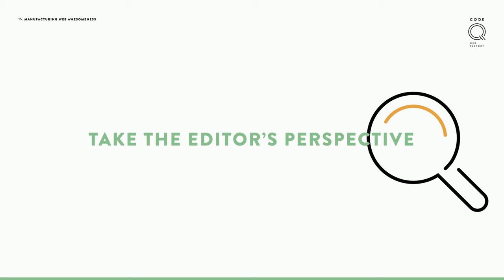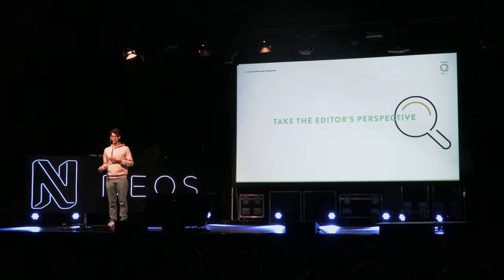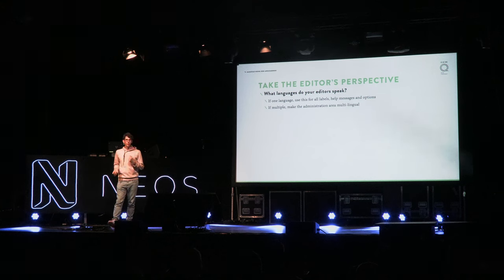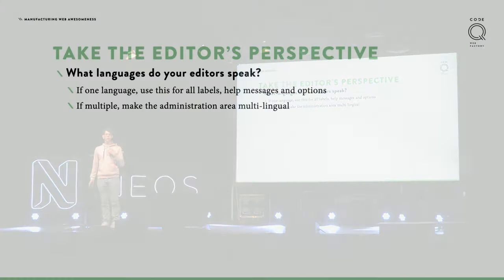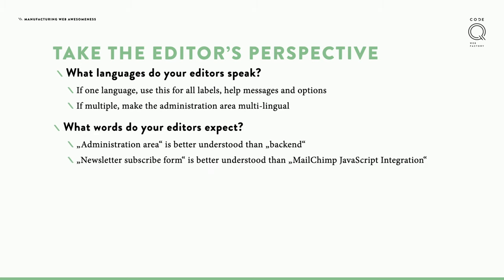It's very important that you understand what editors will be using your website before you even start to develop. What language do your editors speak? If it's always the same language, you can make all labels in one language. Or do you have editors who only speak French, English, or German? You might need all your labels translated. What kind of words do your editors use? They're not as technical as the language we speak. Editors often don't understand what a back-end is — they use words like 'administration area'. When they create a node type, they want to call it 'newsletter subscribe form', not a MailChimp JavaScript integration.